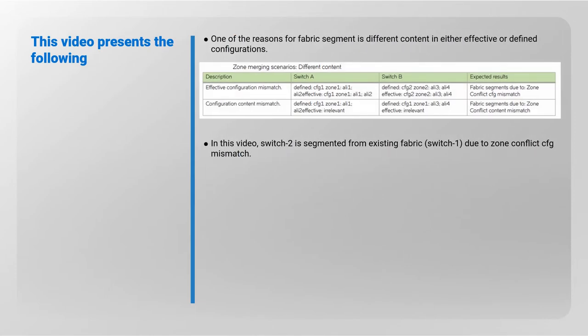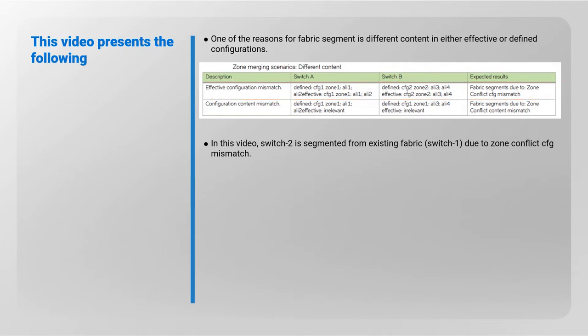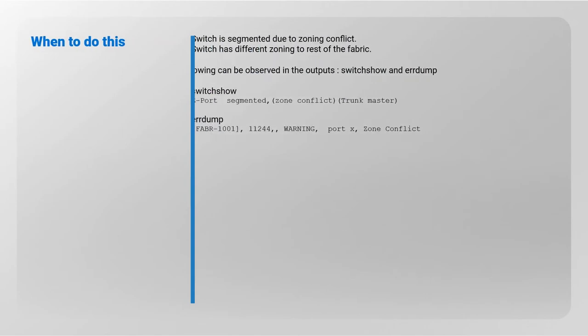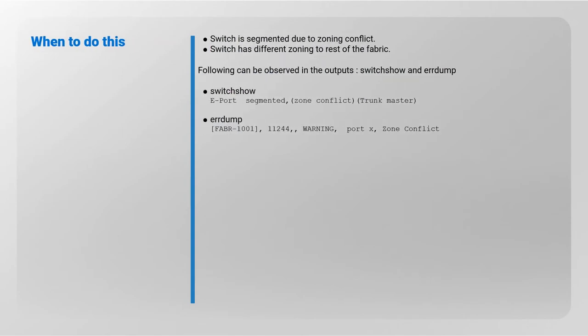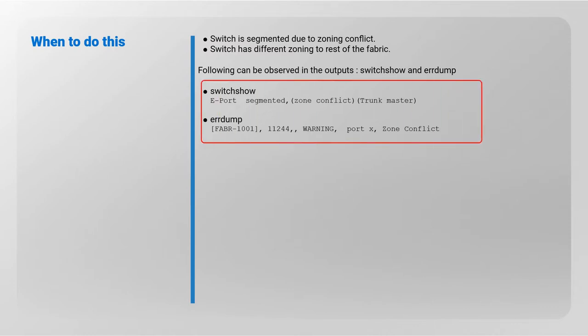One of the reasons for fabric segmentation is different content in either the effective or defined configurations. In this video, switch two is segmented from the existing fabric due to a zone conflict cfg mismatch. This occurs when a switch has different zoning to the rest of the fabric.